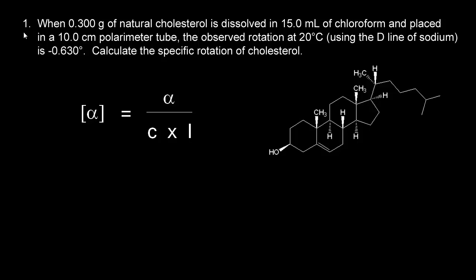Let's do some calculations using optical activity. For our first problem, we have 0.300 grams of natural cholesterol — an optically active compound — dissolved in 15.0 milliliters of chloroform. We put that solution in a 10.0 centimeter polarimeter tube. The observed rotation at 20 degrees C, using the D line of sodium, turns out to be negative 0.630 degrees. Our goal is to calculate the specific rotation of cholesterol.